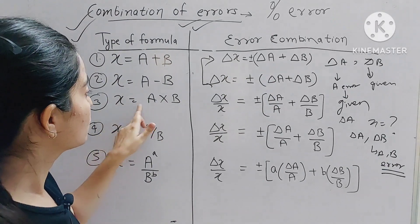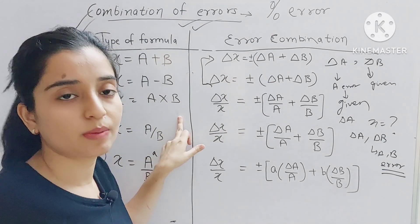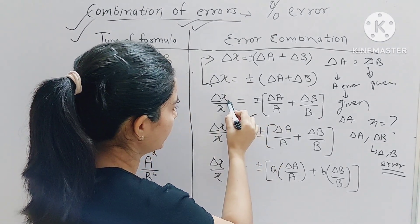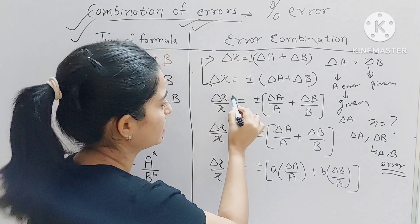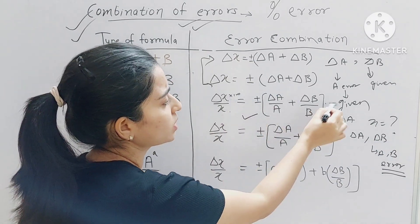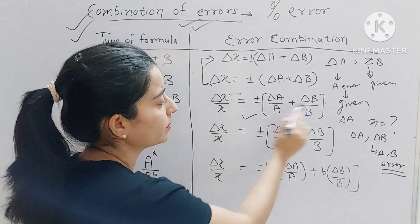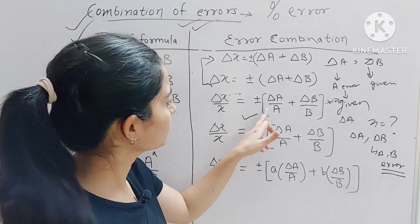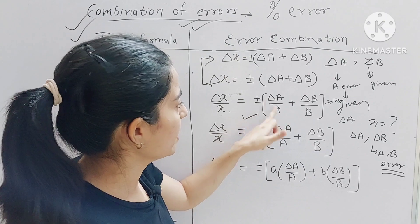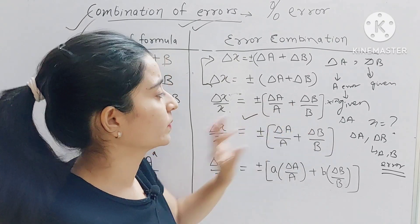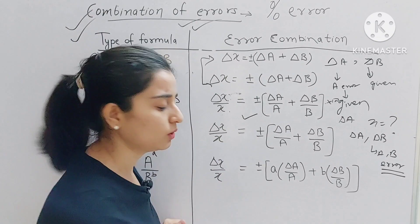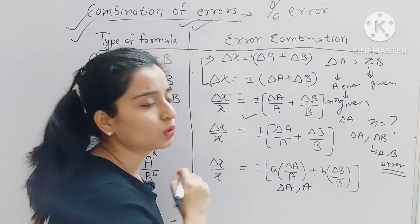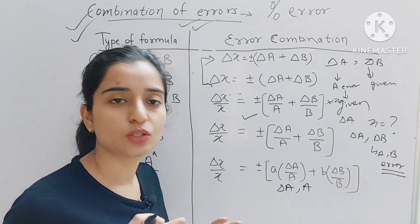The third case is x = A × B, multiplication. Here the formula changes: Δx/x (percentage error, multiplied by 100) = ΔA/A + ΔB/B. The error will be given in the form, for example, '6 ± 0.06,' so A = 6 and ΔA = 0.06. We will be clearly told what A and delta A are.